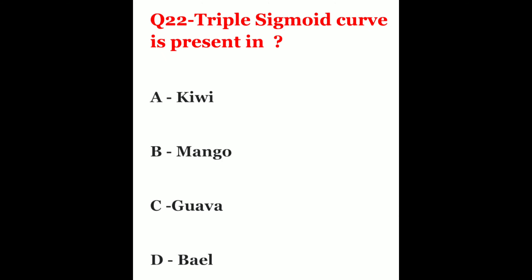Question 22. Triple sigmoid curve is present in? The options are kiwi, mango, guava, or bael. The correct answer is kiwi.